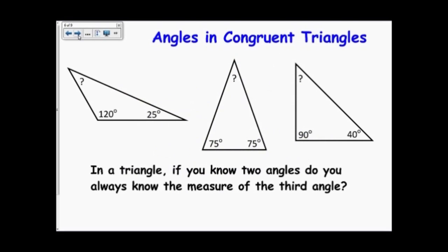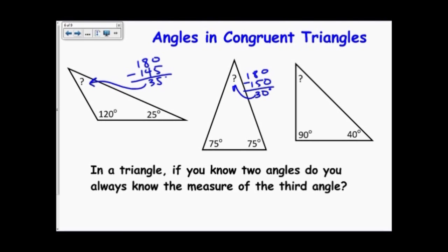Next: angles in congruent triangles. In a triangle, if you know two of the angles, then you always know the third angle. I'd find it by taking 180 and subtracting the sum of the other two — for example, 180 minus 145 gives 35. And 180 minus 150 gives 30. So if I know two angles, I will know the third one.